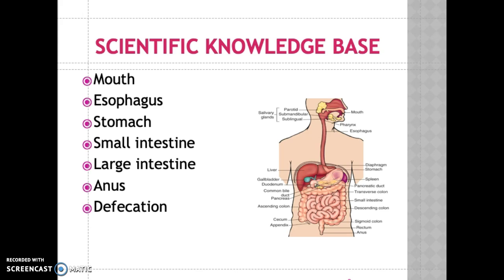Let's look at the scientific knowledge base on the GI system. The gastrointestinal system consists of the mouth, esophagus, stomach, small intestine, large intestine, anus, and defecation. The mouth mechanically and chemically breaks down food particles to smaller size. The function of the esophagus is that food enters the upper esophagus through the sphincter muscle.